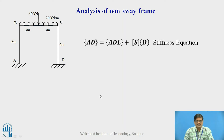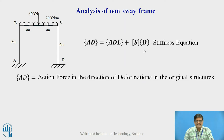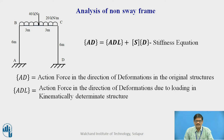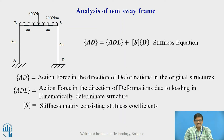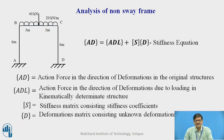We are aware that the stiffness equation is AD = ADL + S × D, where AD is the action force in the direction of deformations in the original structure, ADL is the action force in the direction of deformations due to loading in the kinematically determinate structure, S is the stiffness matrix, and D is the deformation matrix. We shall find all these matrices separately and substitute them into this equation so that the unknown deformations can be obtained.